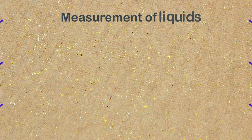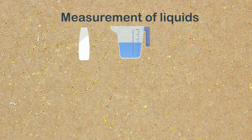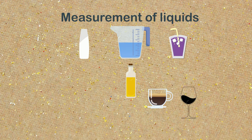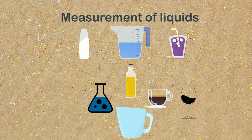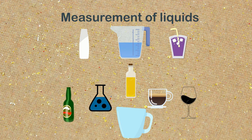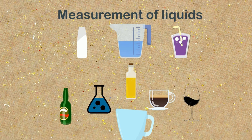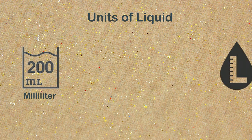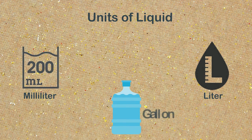Measurement of liquids: we can measure the quantity of liquids such as water, milk, juice, and oil in different containers such as a cup, glass, jug, beaker, and bottle. These containers often have a measuring scale written on them which indicates the quantity of the liquid. The measuring units of liquid are milliliter, liter, and gallon.